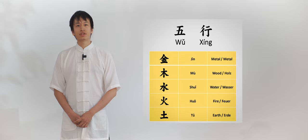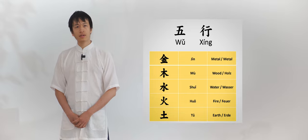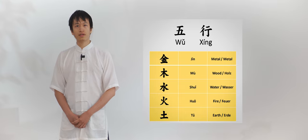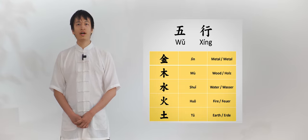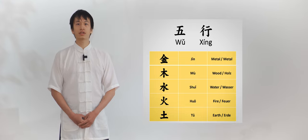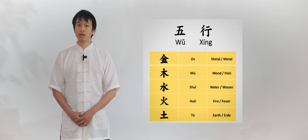They consist of gold or metal (金), wood (木), water (水), fire (火), and finally earth (土). 金木水火土. This is the common order you will hear Chinese people talk about the five elements.